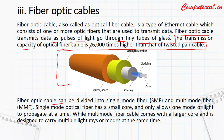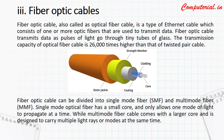Fiber optic cable can be divided into single mode and multi-mode fiber optic cables. Single mode cable can carry one type of data at a time. In multi-mode, we can have multiple cables in parallel and can send and receive on two cables simultaneously. Single mode optical fiber has a small core and only allows one mode of light to propagate at a time.